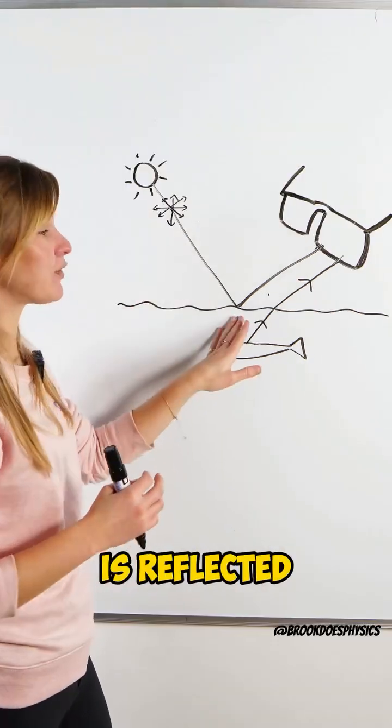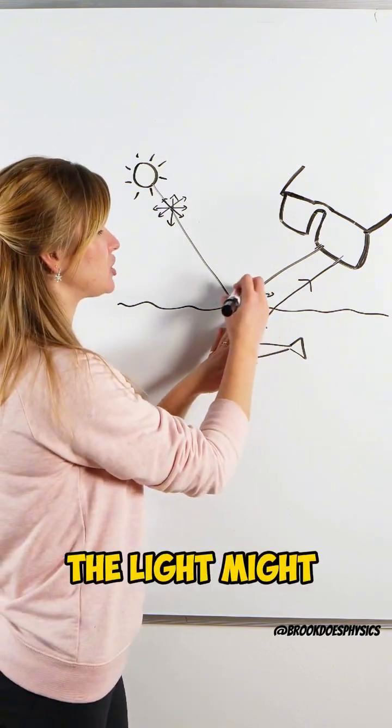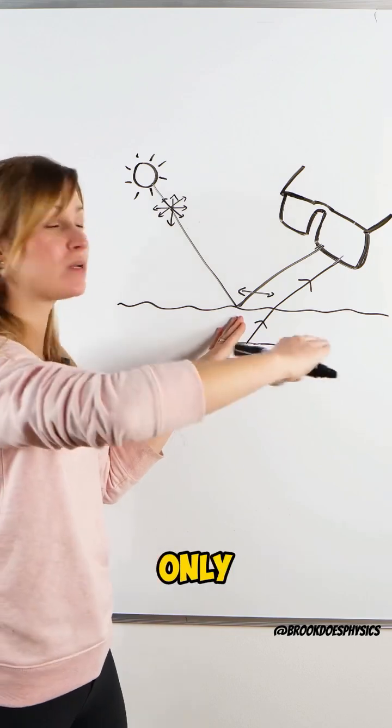When that light is reflected from the surface of the water, it becomes partially polarized. This means the light starts vibrating in one direction only.